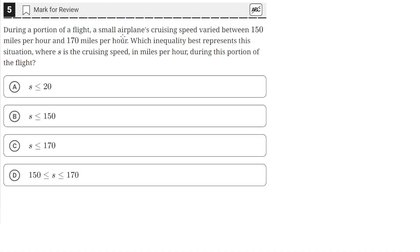During a portion of a flight, a small airplane's cruising speed varied between 150 miles per hour and 170 miles per hour. Which inequality best represents this situation where S is the cruising speed in miles per hour during this portion of the flight?